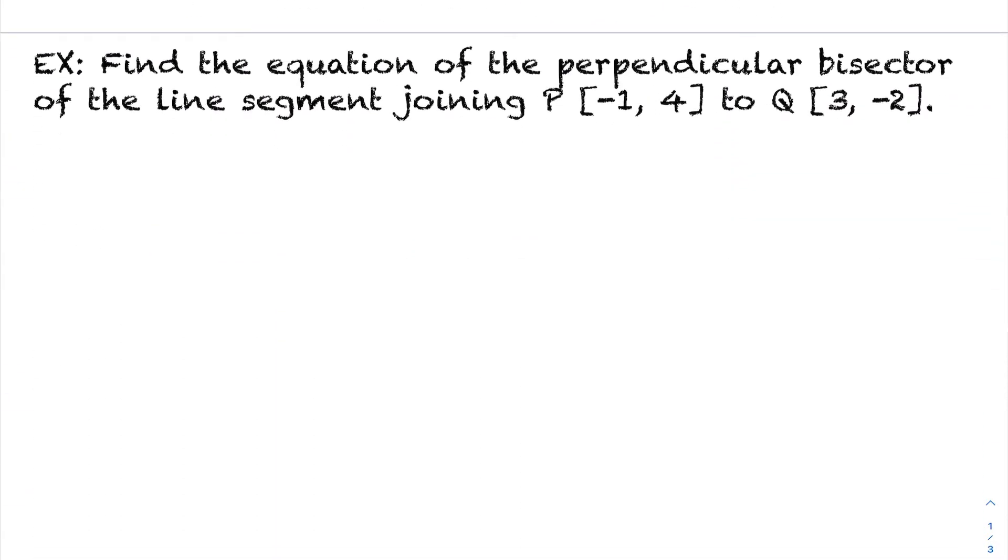Let's take a look at an example of how you would do this, how you would actually calculate this with some numbers here. Okay, so draw yourself a Cartesian plane here, and let's see what they're saying here. It says, find the equation of the perpendicular bisector whose line segment is joined by P, Q.